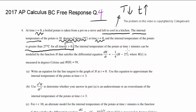The internal temperature of the potato at time t minutes, or maybe we're gonna need to use units, so let's pay attention, can be modeled by the function h that satisfies the differential equation dh/dt equals negative one fourth times h minus 27, where h(t) is measured in degrees Celsius and h(0) is 91. And h(0) is 91 is just restating that the temperature is 91 at time t equals zero.